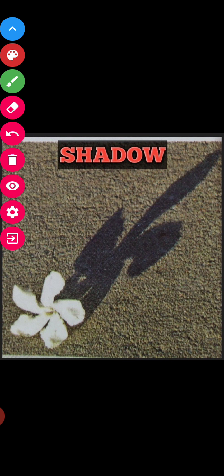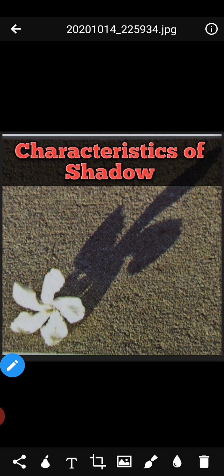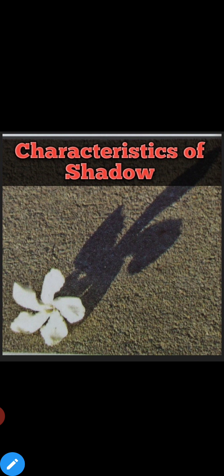Now, characteristics of shadow. First, shadow is formed only when light is blocked by an opaque object. जब opaque object के द्वारा light को रोका जाता है, तभी shadow बनता है.